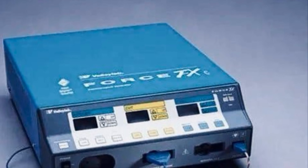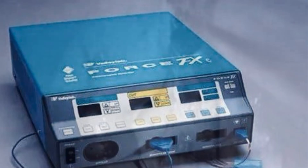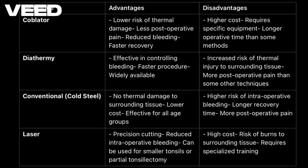Diathermy tonsillectomy uses high-frequency electric current to both cut tissue and coagulate blood vessels, minimizing intraoperative bleeding. This method is beneficial for cases where bleeding control is essential. However, diathermy operates at a higher temperature, which can cause more thermal injury and often leads to increased postoperative pain. This technique may also carry a higher risk of secondary bleeding.